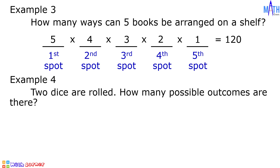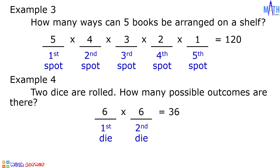Example number four: two dice are rolled. How many possible outcomes are there? There are two independent events — the outcome of the first die and the outcome of the second die. There are six possible outcomes for each die. Six times six is equal to 36. There are 36 possible outcomes in rolling two dice.